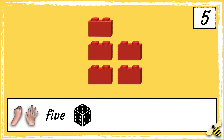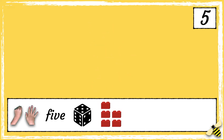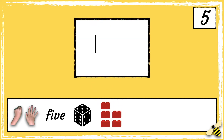Could you have a go at finding 5 things? For example, you could find 5 apples. Here are 5 notches on a tally chart. Notice how the 5th one crosses the others.